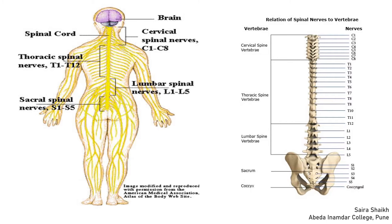The spinal cord gives 31 pairs of spinal nerves that connect to voluntary organs or skeletal muscles. In the cervical region, 8 pairs of spinal nerves come out; in the thoracic region, 12 pairs; in the lumbar region, 5 pairs; in the sacral region, 5 pairs; and in the coccygeal region, 1 pair — making a total of 31 pairs.